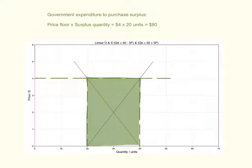However, we mentioned that when a price floor is imposed, there is a surplus. Sometimes you might be asked to calculate the government expenditure to purchase that surplus.